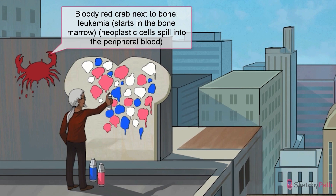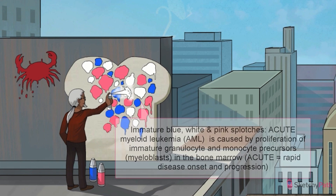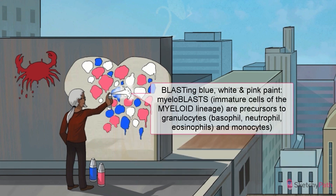Let's start with the acute version. Acute myeloid leukemia, or AML, is caused by a somatic mutation in a bone marrow stem cell, specifically a myeloid stem cell. This cell gets stuck in the myeloblast stage and starts to proliferate like crazy, filling the marrow and blood with millions of immature myeloid progenitor cells. To remember myeloblasts specifically, think of these blasts of spray paint made by this urban artist — those immature, irregularly shaped splotches of paint are our recurring symbol for immature cells getting pumped out into the circulation before they're fully formed.